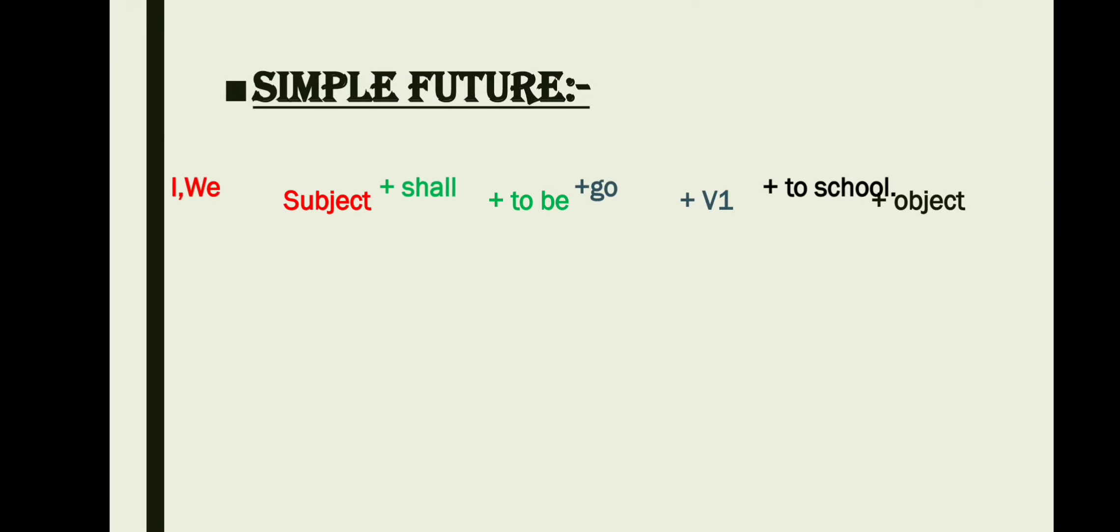If I am going to use I and we as a subject, only one of them I am going to use. At that time I have to use shall as a helping verb.